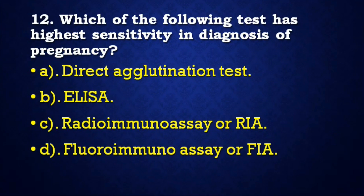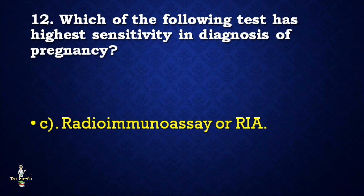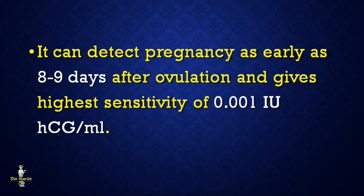Next question: Which of the following tests has the highest sensitivity in diagnosis of pregnancy — direct agglutination test, ELISA, radioimmunoassay (RIA), or fluoroimmunoassay (FIA)? Correct answer is radioimmunoassay (RIA). It can detect pregnancy as early as 8 to 9 days after ovulation and gives the highest sensitivity of 0.001 international units of hCG per ml.